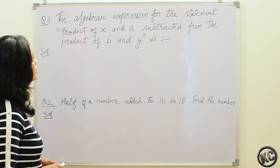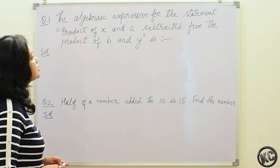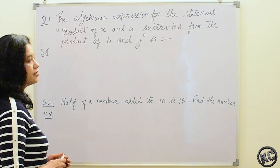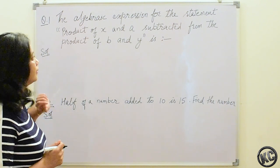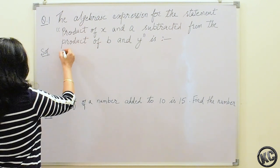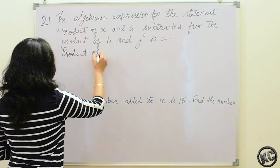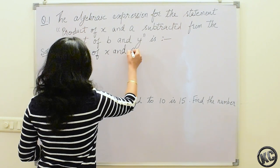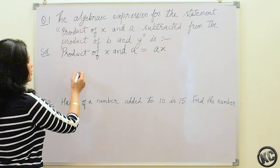The algebraic expression for the statement: product of x and a subtracted from the product of b and y. We have to write the algebraic expression for this statement. Product of x and a will be written as ax.